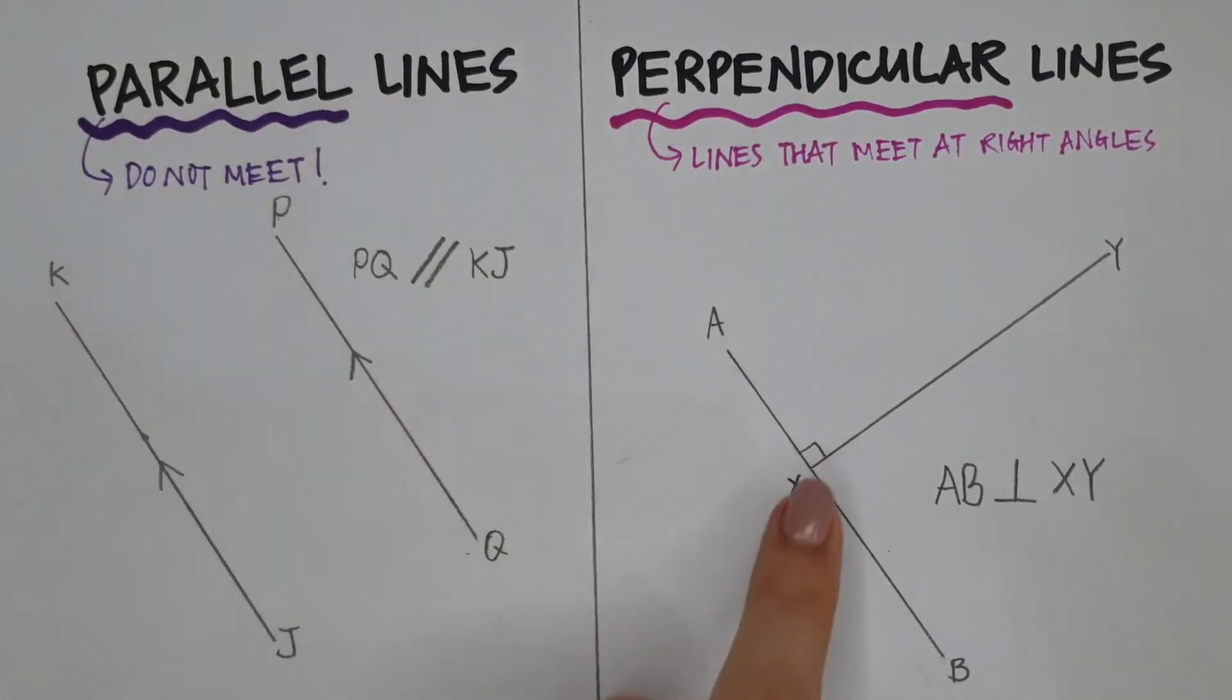Remember, perpendicular lines meet at right angles, but parallel lines are lines that do not meet at all.